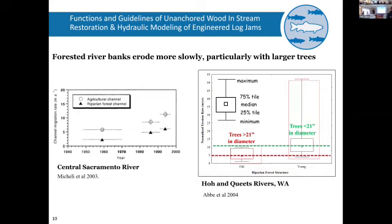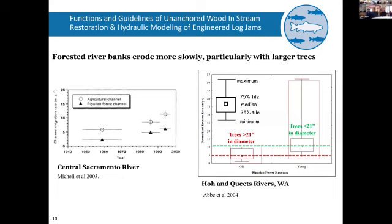One thing we found out in the last few decades — there was even an old map made by an army surveyor back in the 1800s who recognized that wooded or forested banks erode more slowly than non-forested banks. We have more data on that now. Looking at the Sacramento River, here's the migration rate over time — there are two different populations — and the forested migration rates are about half of what they are in agricultural areas.